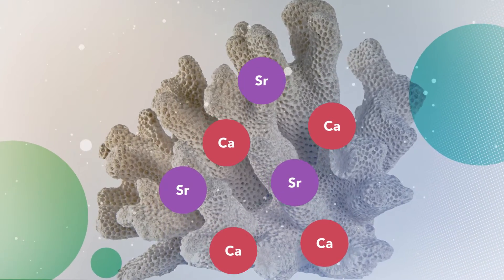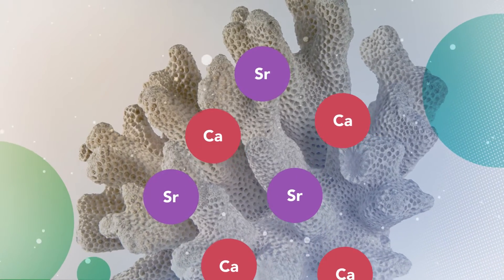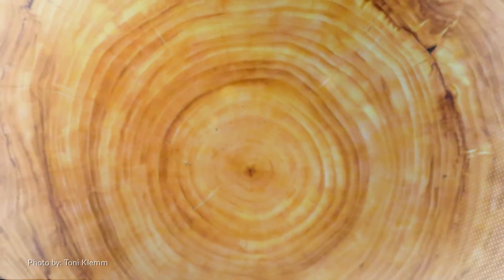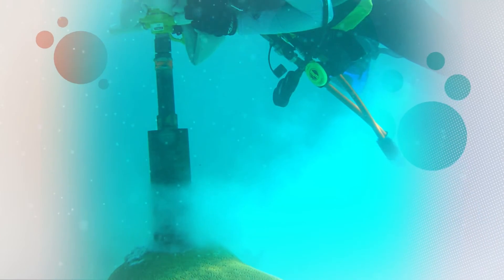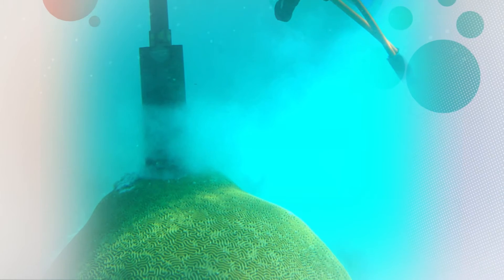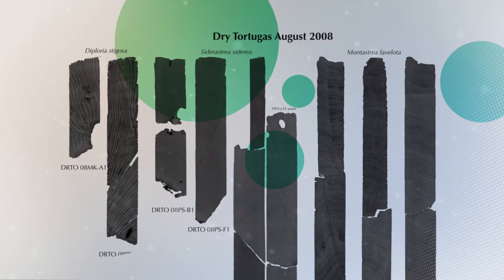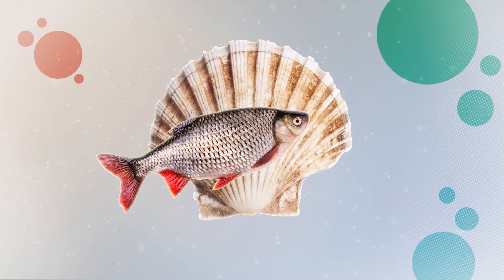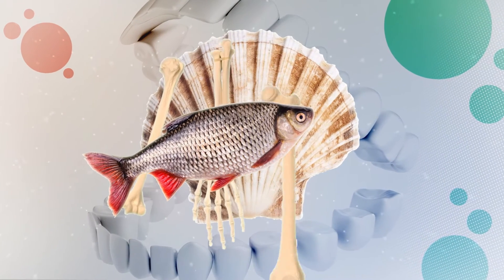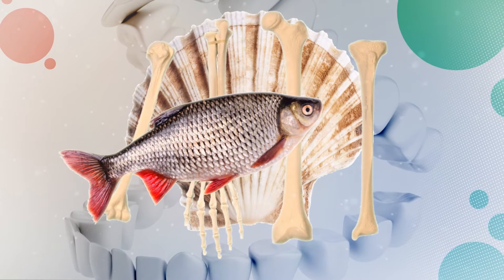The key ingredient of an archive is a way to tell time. Some organisms form incremental bands as they grow, like the rings you see in a tree. Large boulder-shaped corals also have density bands visible in x-rays. In fact, clam shells, ear bones of fish, and even your teeth and bones have some sort of bands that are deposited with time. You can determine the year if you know the date the archive was collected and you count the bands to determine the year.